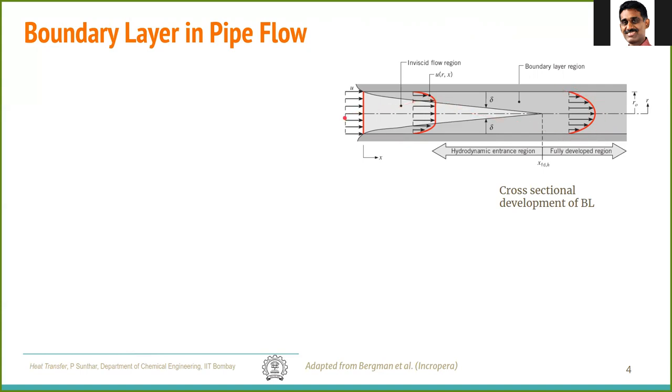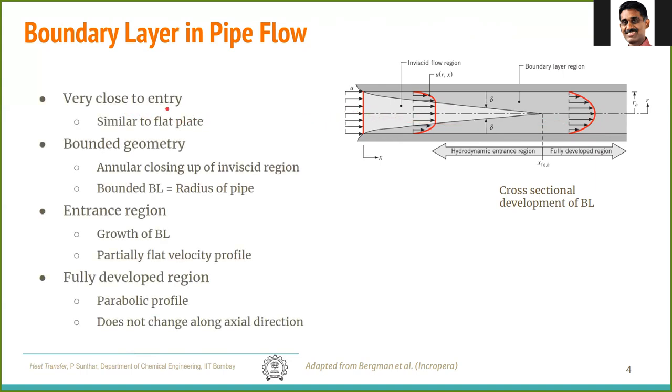So what happens in between this entry to this final parabolic profile? Very close to the entry, if you see this edge here, this looks like a flat plate. So you have a flat uniform velocity that is approaching, and then you can see that the viscous effects will be important in a small layer close to the surface, that is the boundary layer, and the boundary layer will grow. However, this is very different from the flat plate boundary layer.